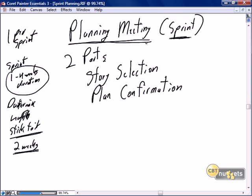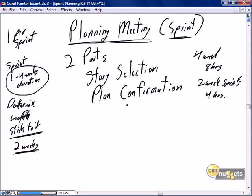A sprint planning meeting for a four-week sprint should take no more than eight hours. If you're doing two-week sprints, your sprint planning meeting should take no more than four hours proportionally. You would certainly never spend a full eight hours planning for a two-week sprint, and even less for a one-week sprint. We set aside four hours for our sprint planning meeting and equally distribute it into two parts.